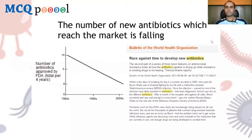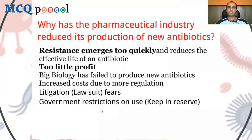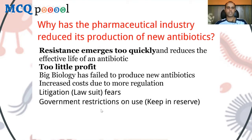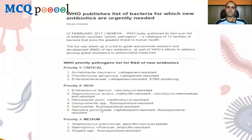The reasons why pharmaceutical industry has reduced production of new antibiotics include: resistance emerges too quickly and reduces the effective life of an antibiotic; there is very little profit; big biology has failed to produce new antibiotics; increased cost due to more regulation and litigation; and government restrictions through antibiotic stewardship programs which keep new antibiotics in reserve for only certain circumstances.